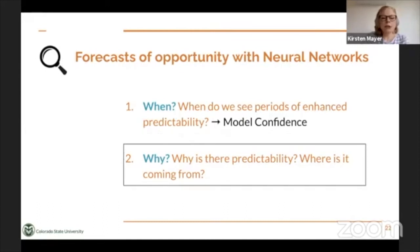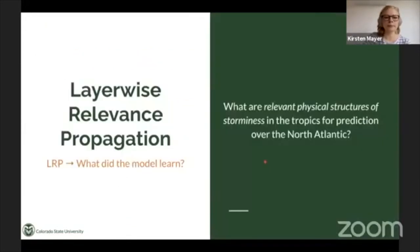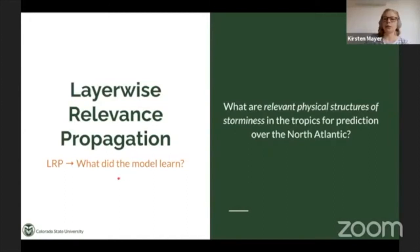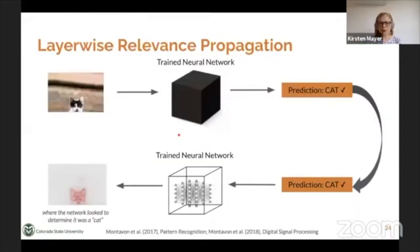Next I'm going to talk about why there is predictability — because this is really the science question: where is this predictability coming from and how can we use this for future forecasts? We use layer-wise relevance propagation, or LRP, and we're essentially asking what did the model learn. In this case, we're asking: what are the relevant physical structures of storminess in the tropics that lead to enhanced prediction skill over the North Atlantic three weeks later?